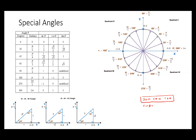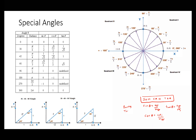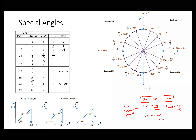Sine theta is the opposite side over the hypotenuse. Cosine theta is the adjacent side over the hypotenuse. And tan theta is the opposite side over the adjacent side. These are what we call the primary trigonometric ratios, and they are only applicable when you have a right angle triangle.